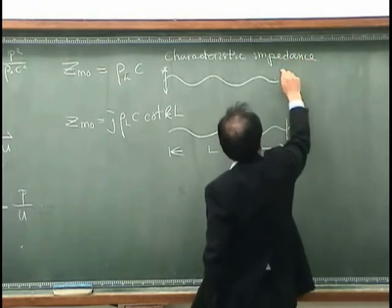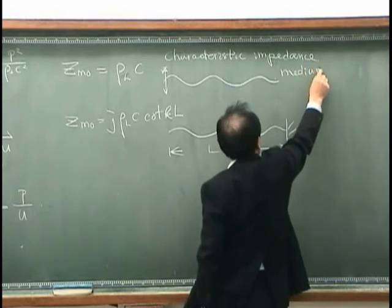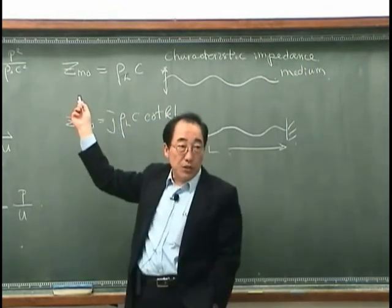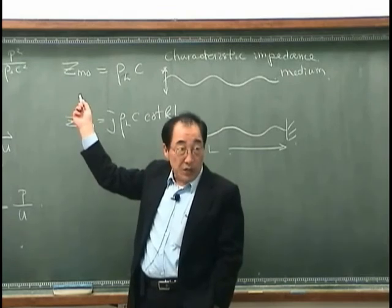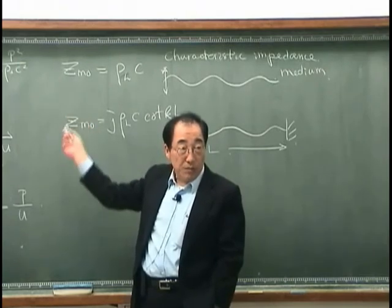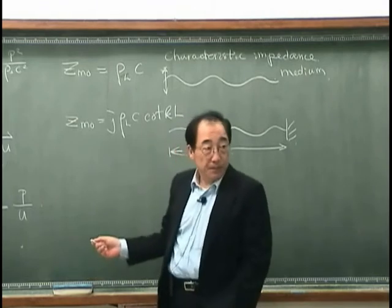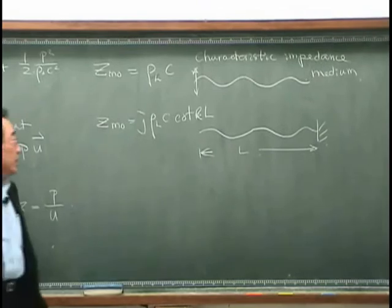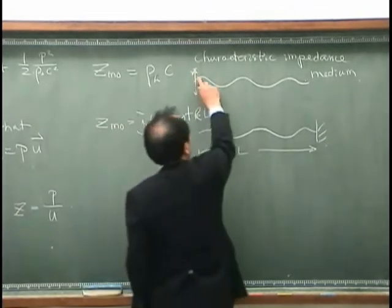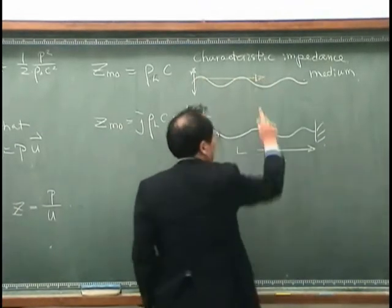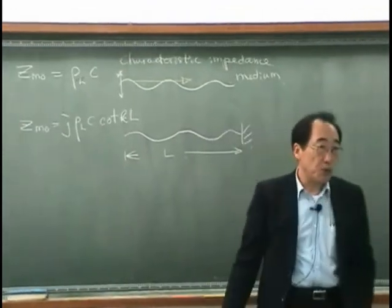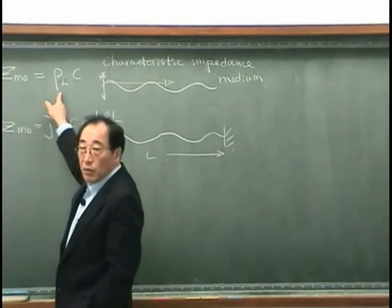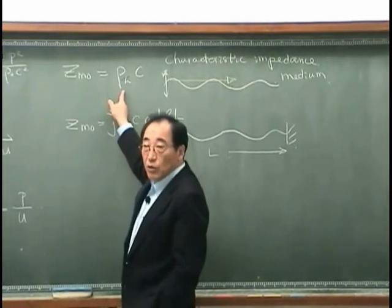Or generally we can say that is characteristic impedance of medium. In other words, if driving point impedance is the same as the characteristic impedance of medium, then the sound or wave is propagating away from the excitation point. And in this case, the driving point impedance has only real part.